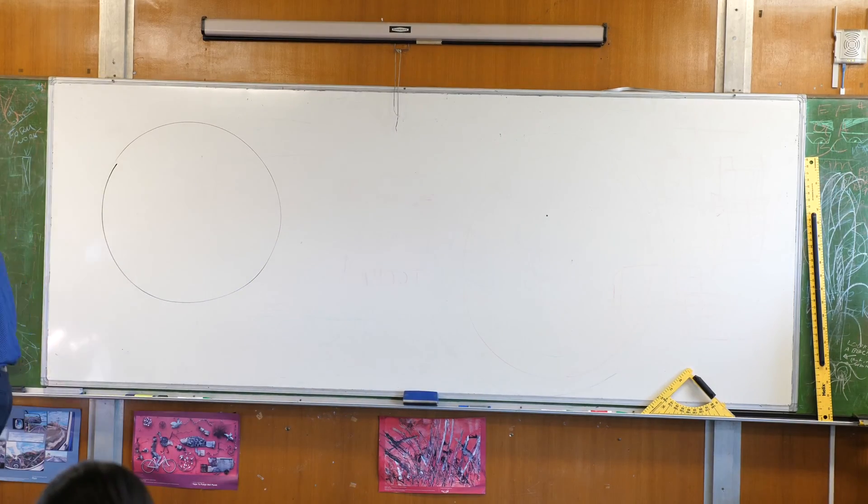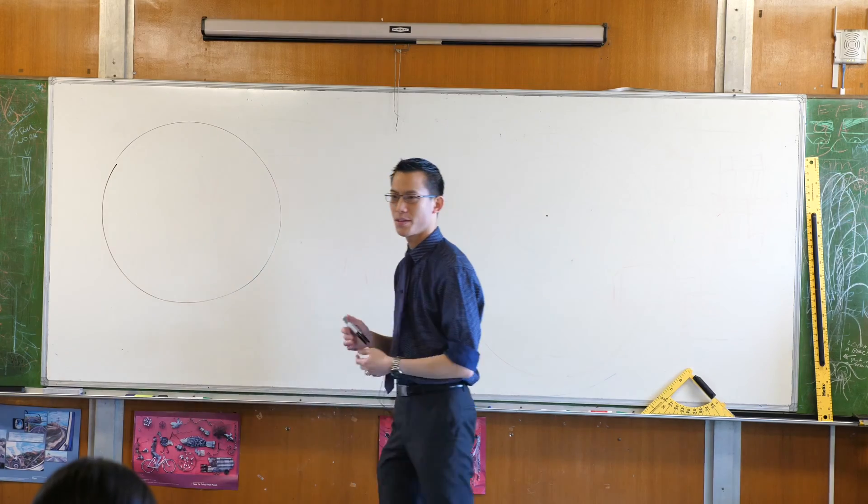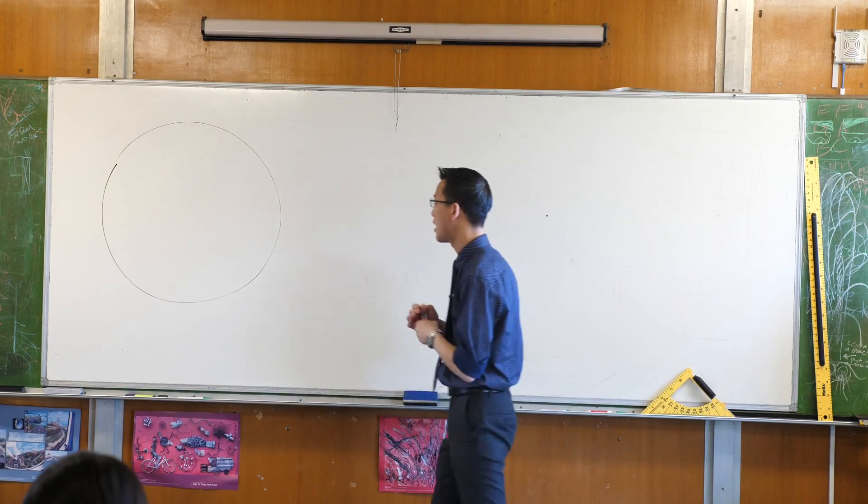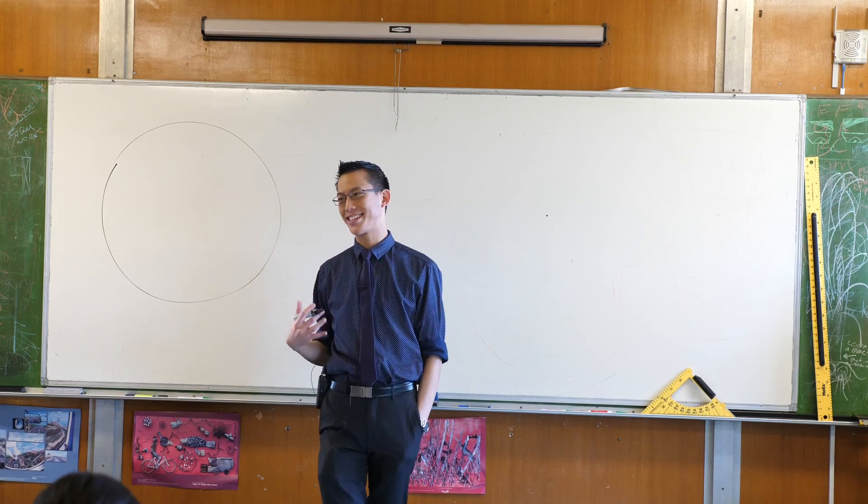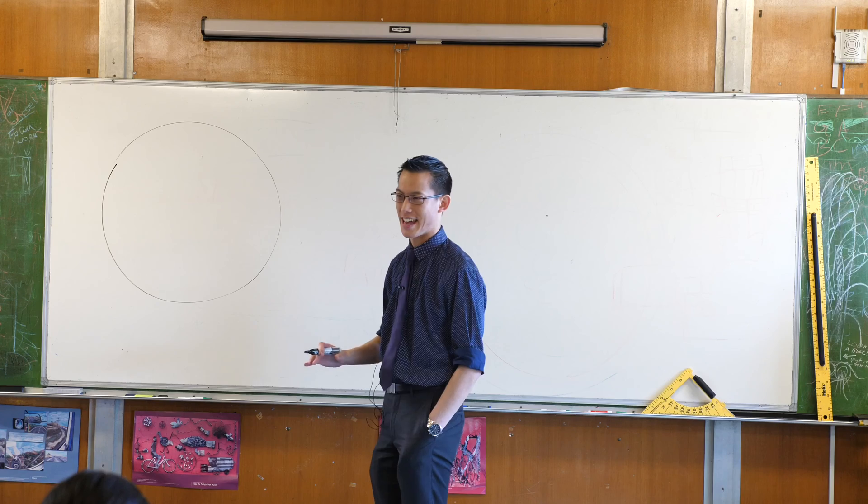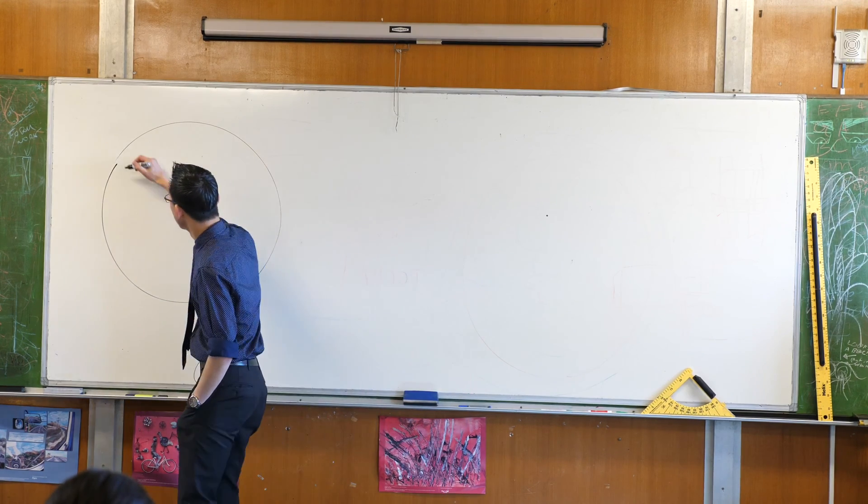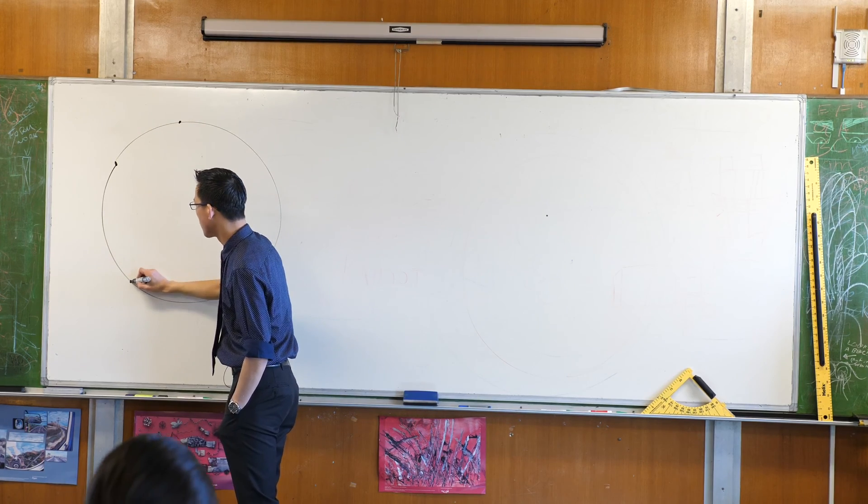Now, in this circle what I'd like you to do is pick any four points on the circumference, any four points that you'd like. Try to make sure when you place them you don't make some really special shape like a square or a rectangle. So any four points, so say here and here, maybe here,